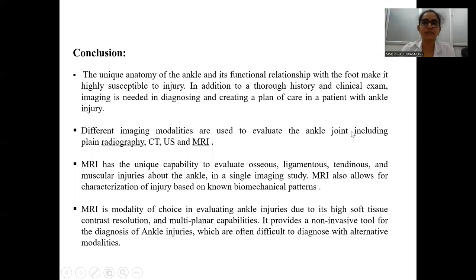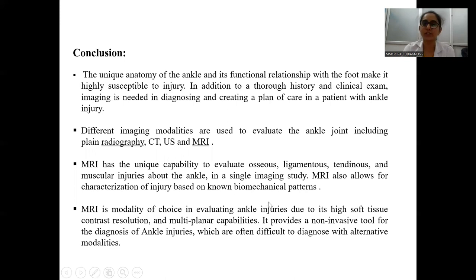The unique anatomy of the ankle and its functional relationship with the foot make it highly susceptible to injury. In addition to thorough history and clinical examination, imaging is needed for diagnosis and treatment planning in patients with ankle injuries. Different imaging modalities are used to evaluate the ankle joint, including plain radiograph, CT, ultrasound, and MRI. MRI has a unique capability to evaluate osseous, ligamentous, tendinous, and muscular injuries around the ankle in a single imaging study, allowing characterization of injury based on known biomechanical patterns. MRI is the modality of choice due to its high soft tissue contrast resolution and multi-planar capabilities, providing a non-invasive tool for diagnosis of ankle injuries that are often difficult to diagnose with alternate modalities.